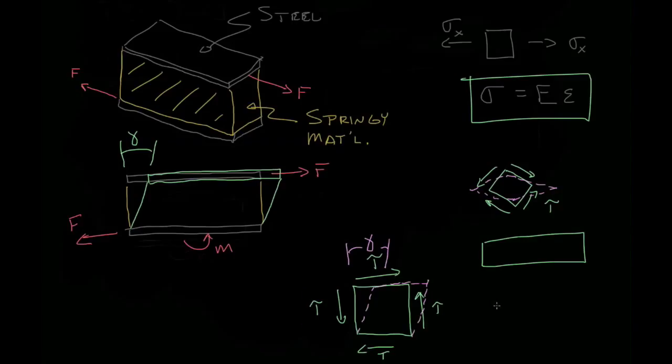And we define the relationship between the stress and the strain for shear by saying that the shear stress equals G, or the shear modulus, times gamma, which is the angle subtended due to the shear.